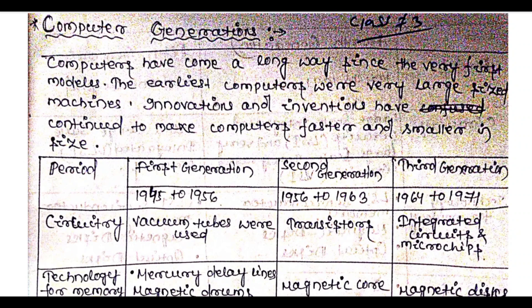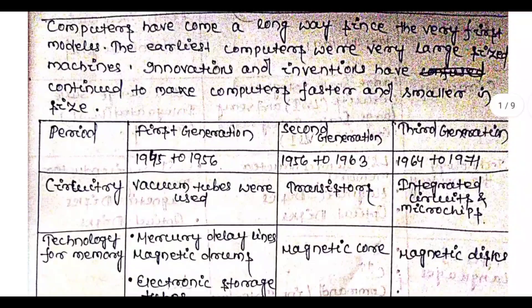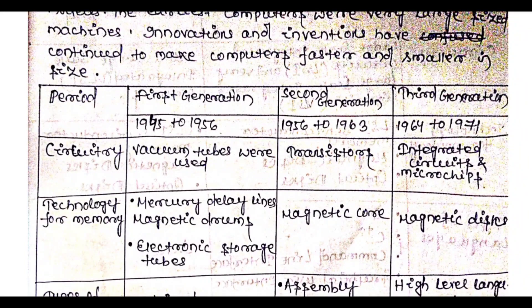Now we have also learned about input devices, output devices, hardware, and software. Computers have come a long way since the very first models. The earliest computers were very large machines, and over time innovations and inventions continued to make computers faster and smaller in size.